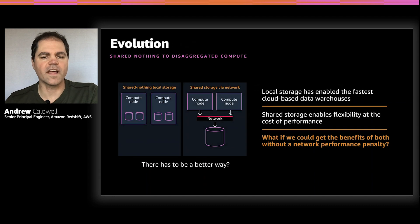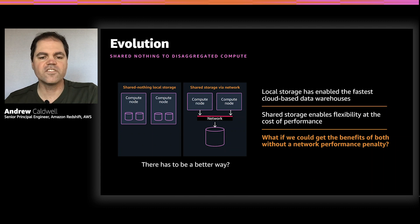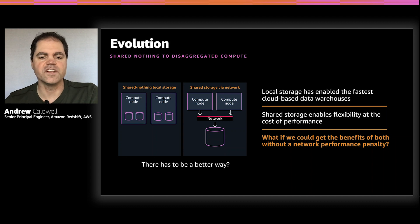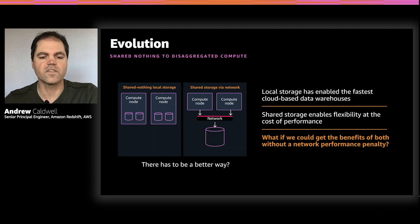Let's start with some context and look at how data warehouses are traditionally built, and how this impacts how they perform. There are really two contrasting architectures for a data warehouse. One approach lets you leverage fast local storage in each compute node, taking advantage of the speed of that local storage, but this can limit scalability. Or you can run directly off shared network attached storage, which gives you the cost efficiency of multi-tenant resources and the flexibility to easily scale, but can be bottlenecked by the network.